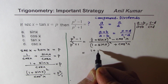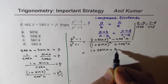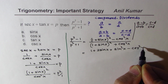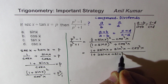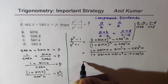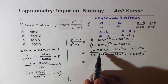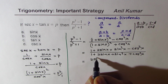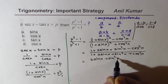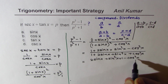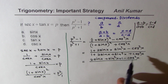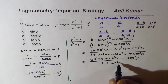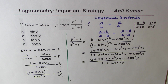Let us expand. We get 1 plus 2 sin x plus sin squared x minus cos squared x in the numerator. Now we can rearrange and write this as 2 sin x plus sin squared x plus 1 minus cos squared x. We combine 1 minus cos squared x to write this as sin squared x. In the denominator, sin squared x plus cos squared x is 1, so we get 1 plus 2 sin x.